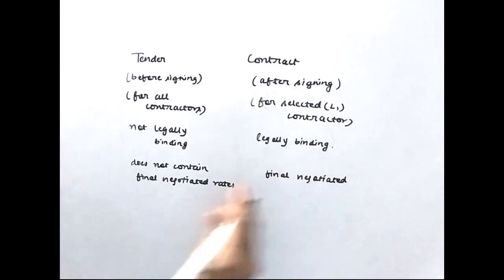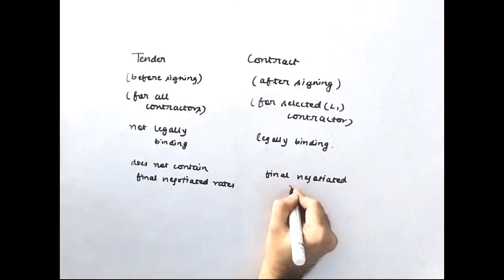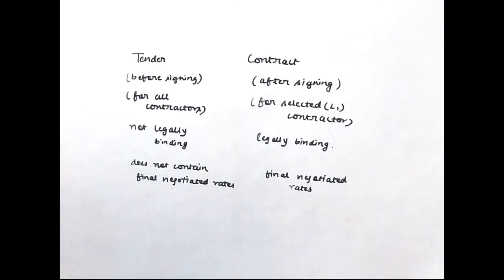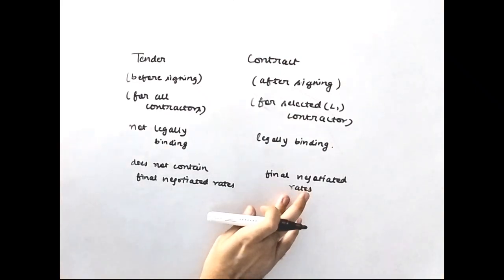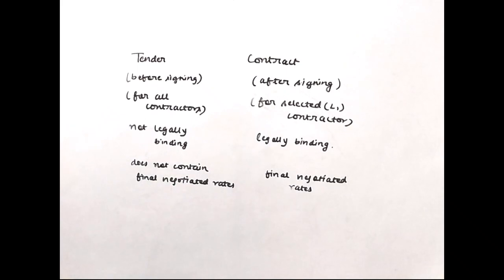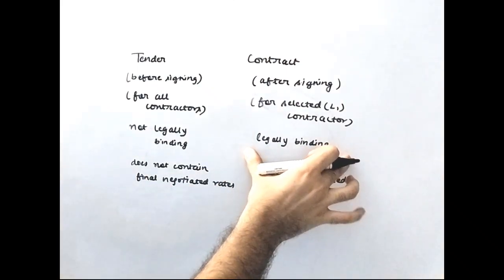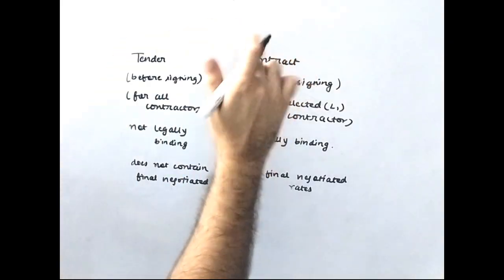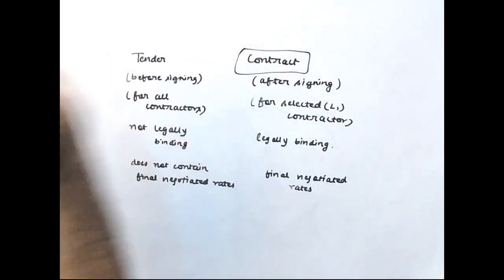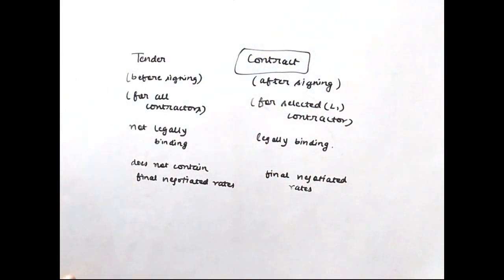The tender does not contain the final negotiated rates — it will just contain the quoted rates. The contract, however, will clearly mention that it is signed between the client and the contractor for a contract value of, say, 100 crore rupees. After it becomes a contract, it will be legally binding, meaning the contractor is bound to perform as per the specifications and quality and safety standards mentioned in the document.